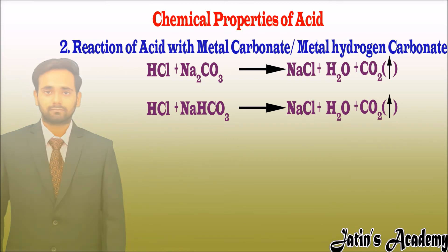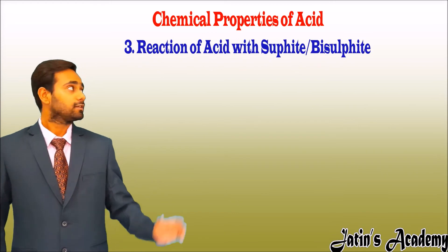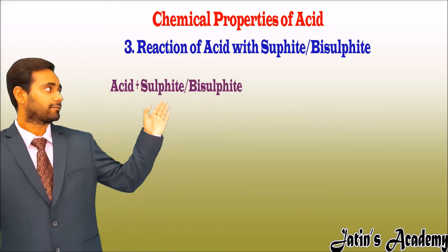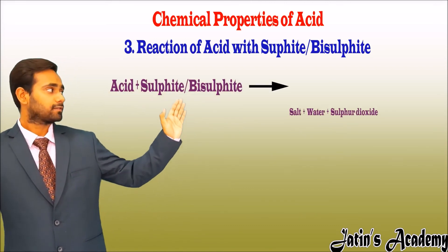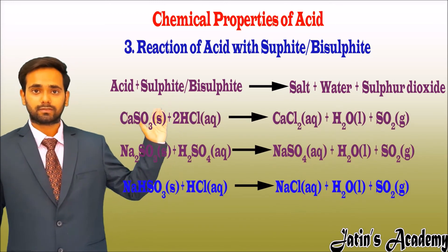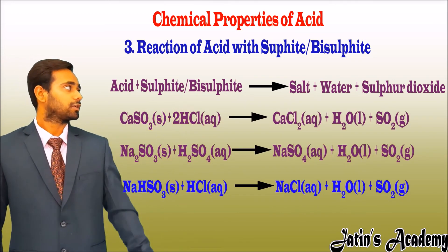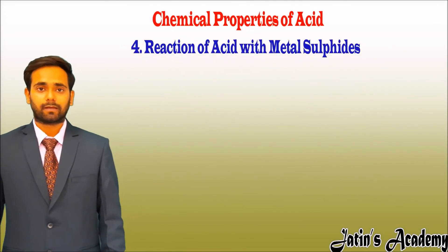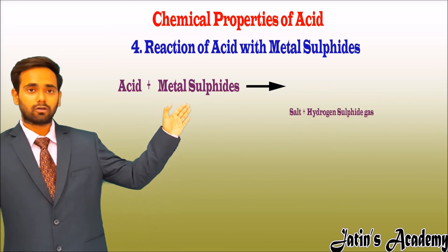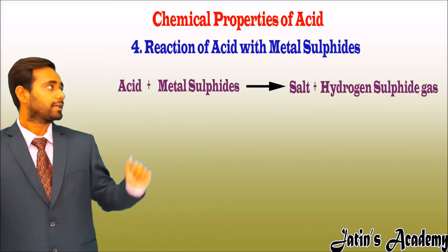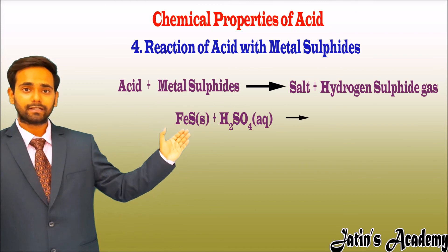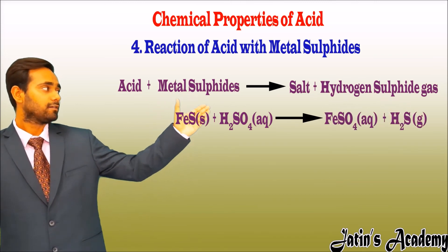The next chemical reaction is when acid reacts with sulfites or bisulfites. In this reaction, acid gives salt, water, and sulfur dioxide gas. Also, when acid reacts with metal sulfides, it gives salt and hydrogen sulfide gas. For example, when iron sulfide reacts with sulfuric acid, it gives iron sulfate and hydrogen sulfide gas.